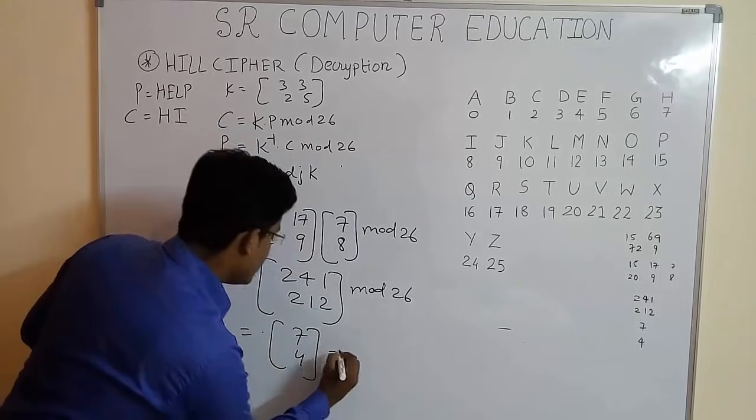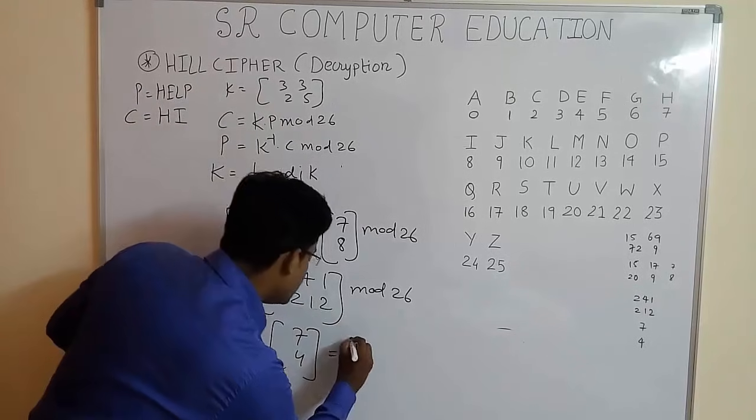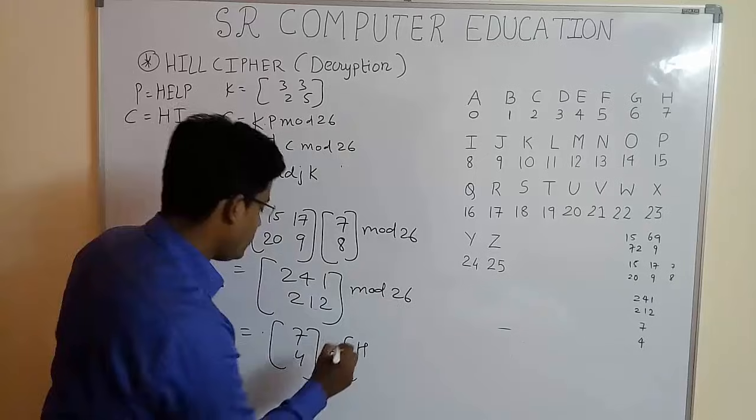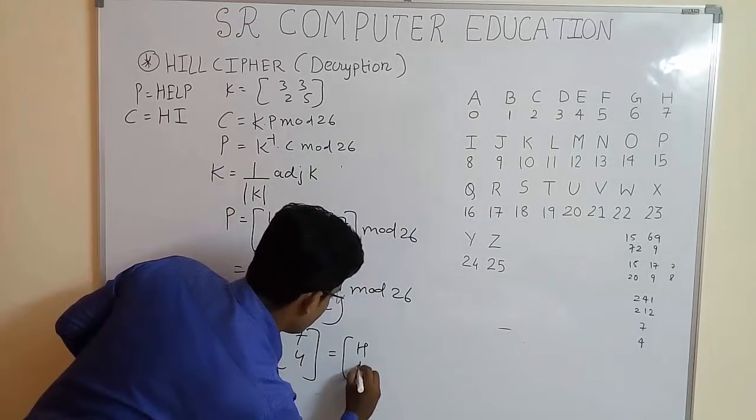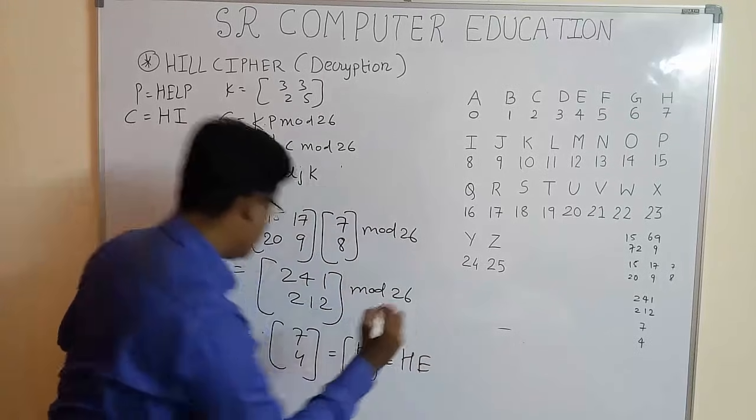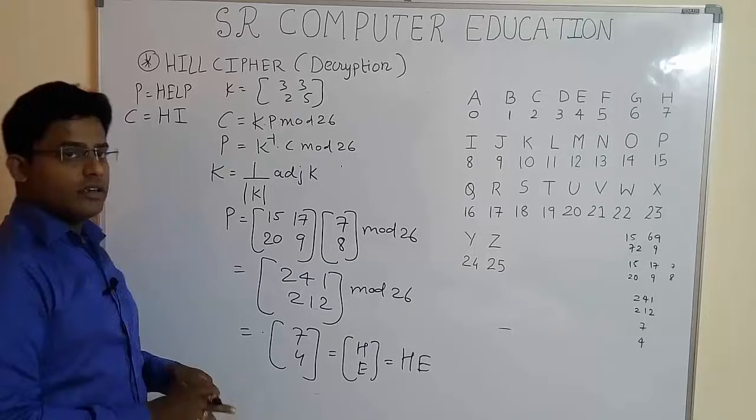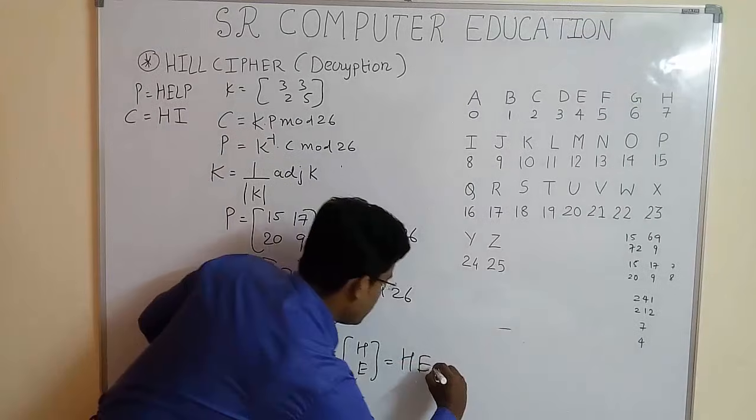We know what is the equivalent alphabet associated with this number. 7 is H and 4 is E. So the answer is HE. We already know our plaintext was HE and we got the plaintext here.